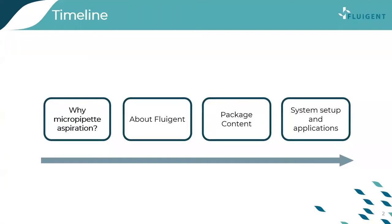Here is the presentation's timeline. I will first explain the main advantages of micropipette aspiration and why it requires high control over the forces applied to cells. I will next introduce Fluigent and some of our instruments related to this application, then cover the package content including the pressure, fluidic, and mechanical elements, how to implement the setup, and finally some typical applications.